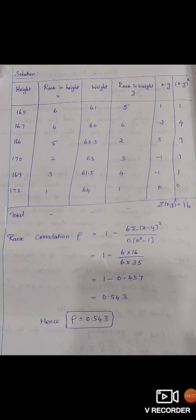So N = 6. 6 into N² means 6². 6² is 36. 36-1 = 35. So you have to simplify this value. We get 1 - 0.457.